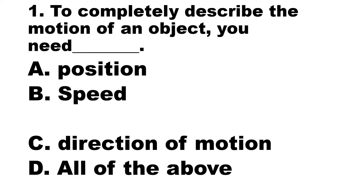Number 1. To completely describe the motion of an object, you need blank. A. Position. B. Speed. C. Direction of motion. D. All of the above.